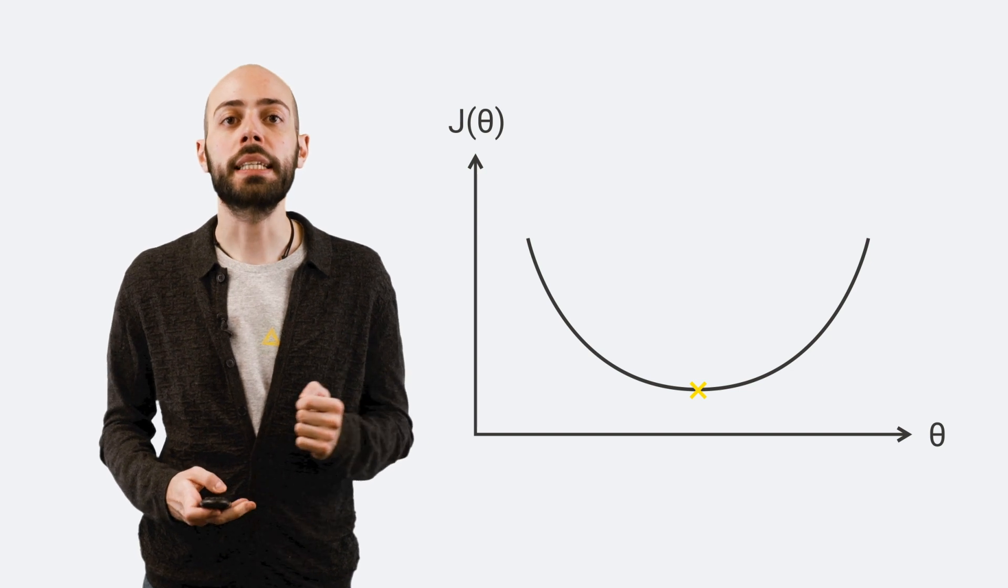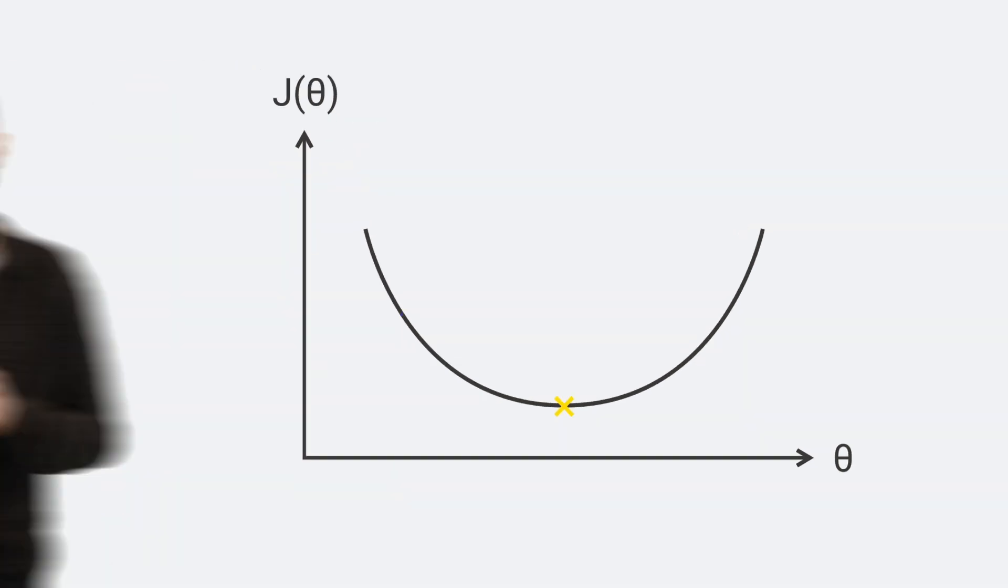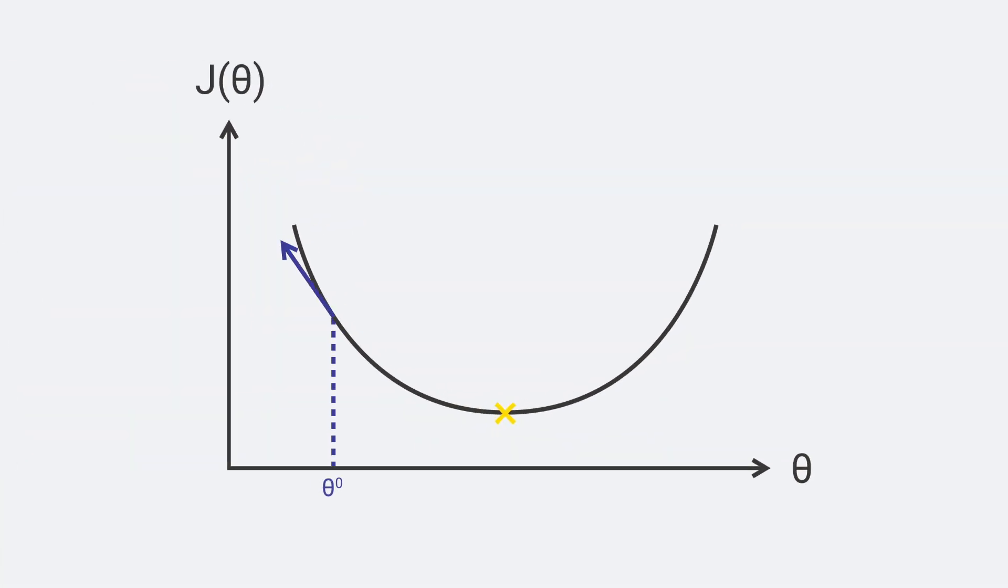The supporting idea behind gradient descent is that the gradient of the cost function points in the direction of the ascending values. So, to move along the descending values, it is enough to take a step in the opposite direction of the gradient.